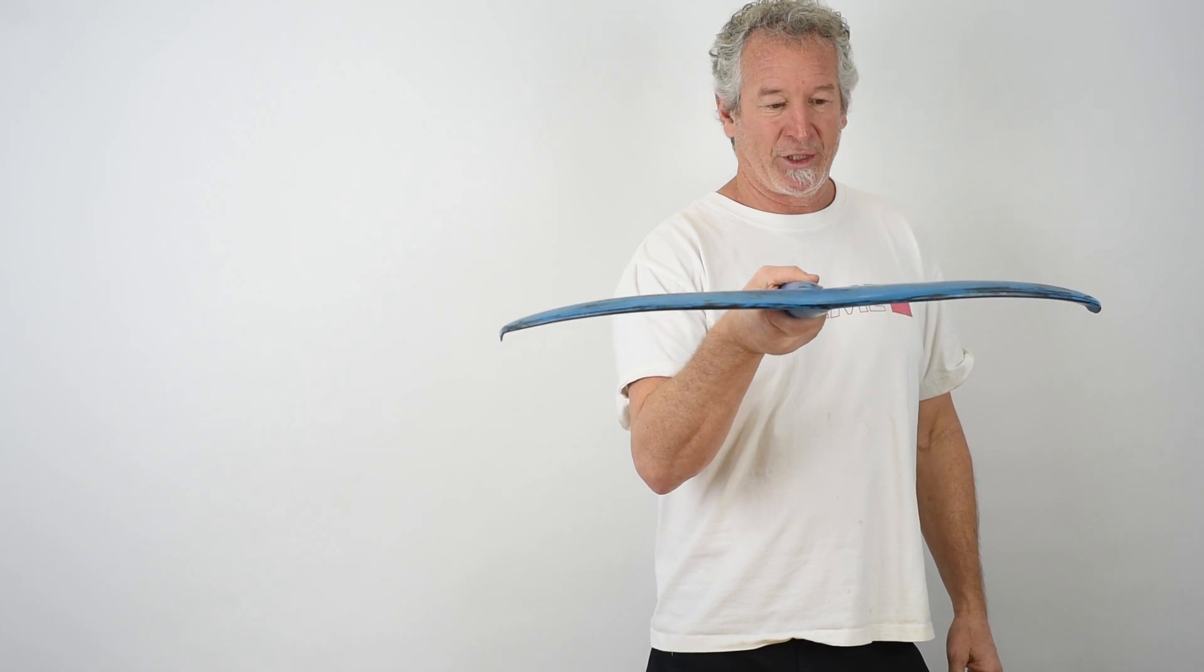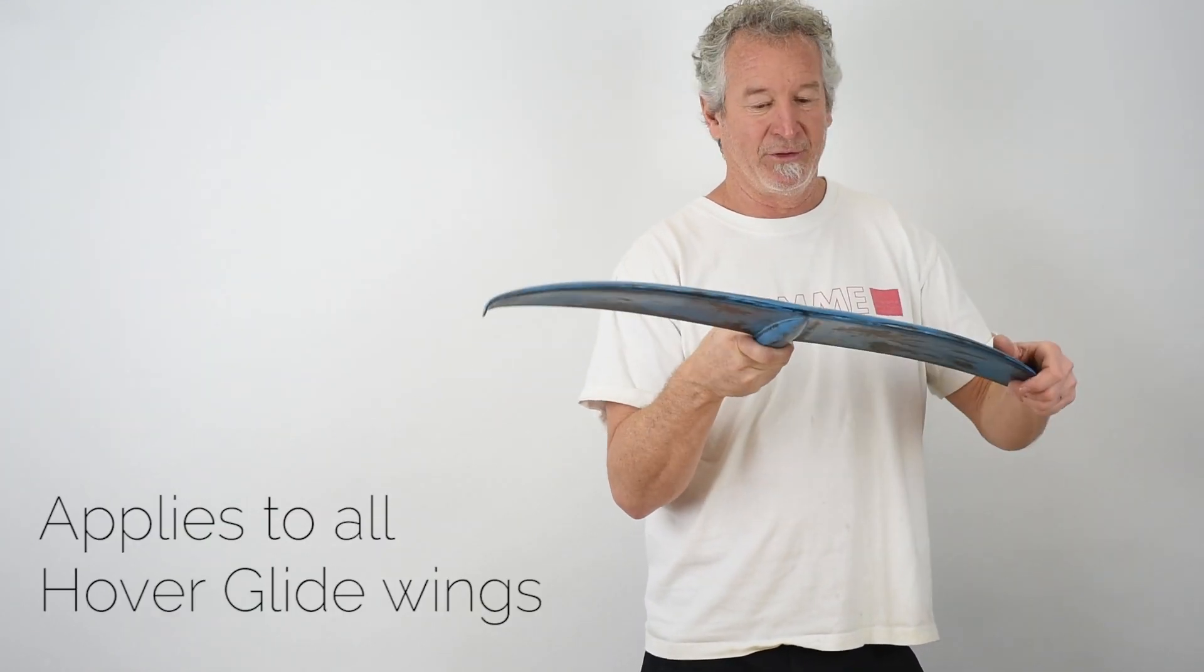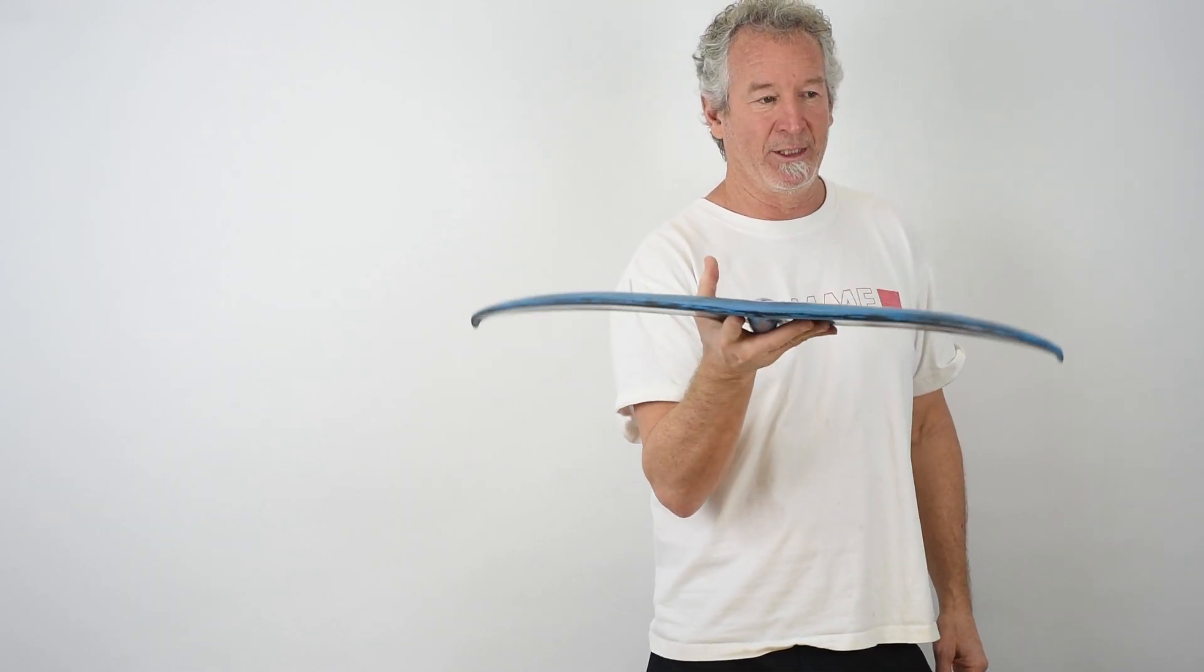So this is a forged carbon wing, 100% carbon. It's actually quite heavy because it doesn't have a foam core in it.